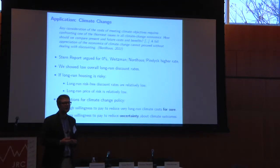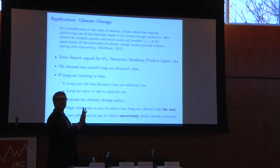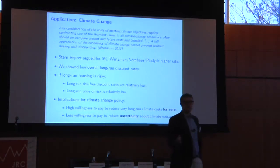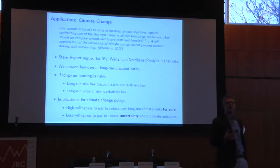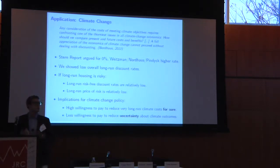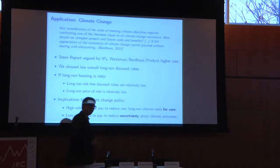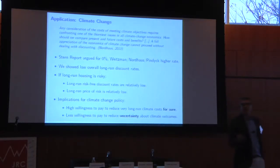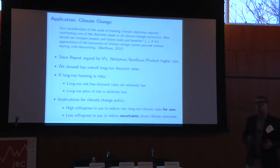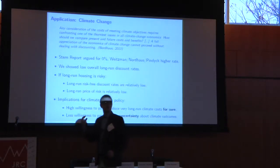Within that literature, people have argued for anything from zero to seven, eight, or nine percent. That difference in applied rates is, in my reading, actually the key driver of disagreement about what should be done about climate — no matter what your climate model says, if you discount something 150 years out at 7%, you're not going to care about it today. What we find in the data are these low overall long-run discount rates, which include both a risk-free discount rate and a risk premium. To tease them apart and apply them to climate change investment, we need assumptions on the quantity of risk of long-run housing.